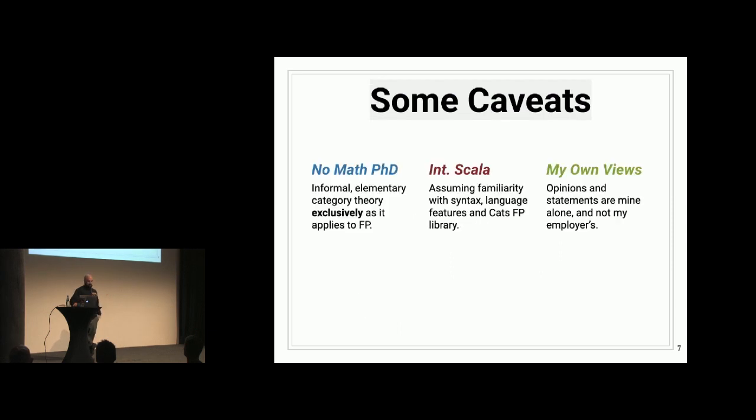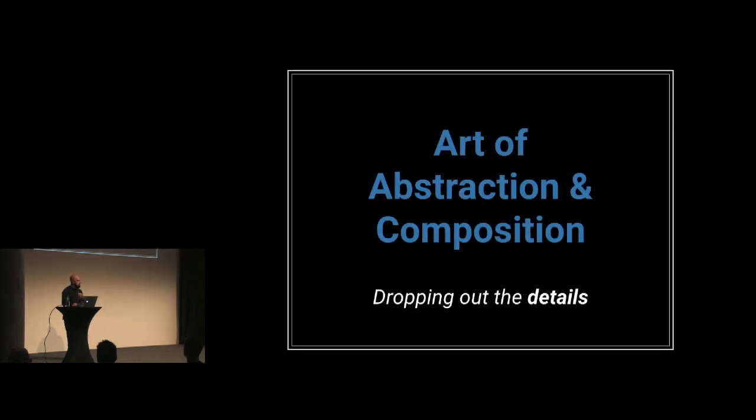So some caveats. As was mentioned, I don't have a math PhD. I'm not a mathematician. So we're just doing kind of informal elementary category theory as it applies to functional programming. We're going to look at some intermediate Scala code. I assume most people are familiar with a library like CATS or ScalaZ. So we're going to go with CATS in this case. And then the views expressed in the talk are my own and not my employers.